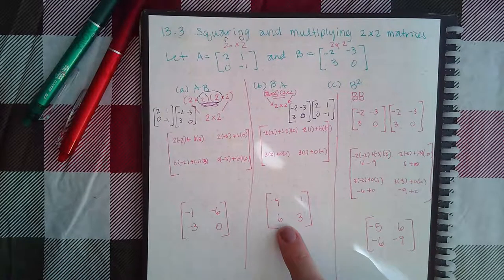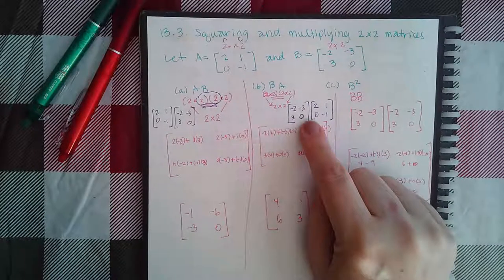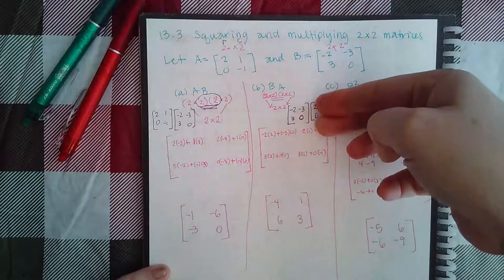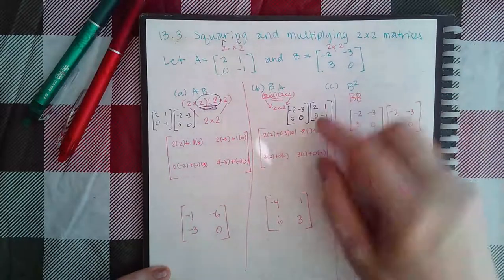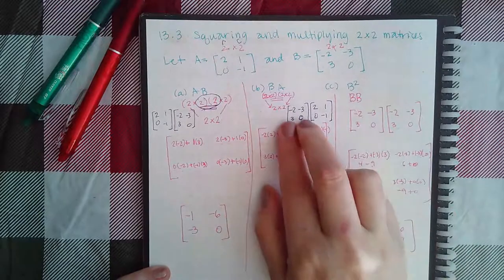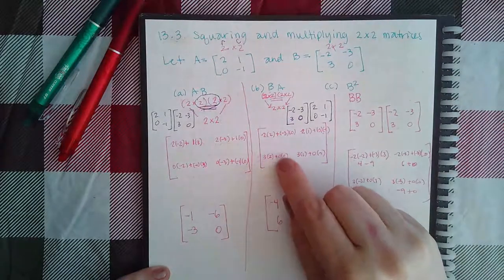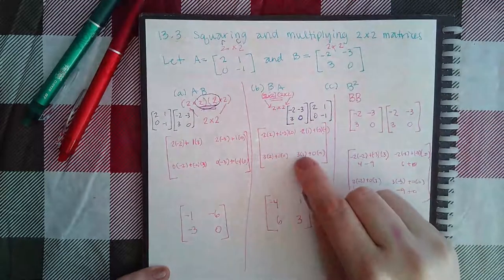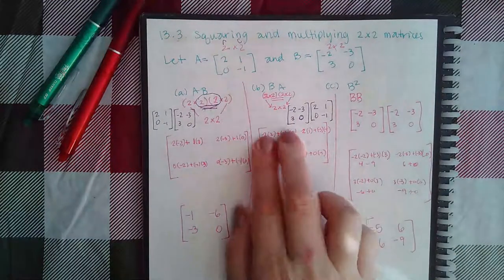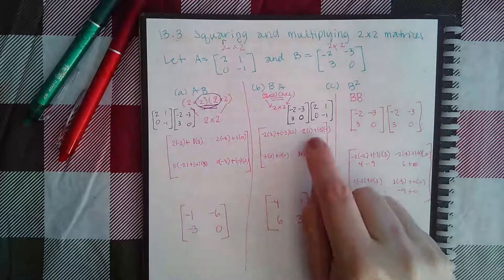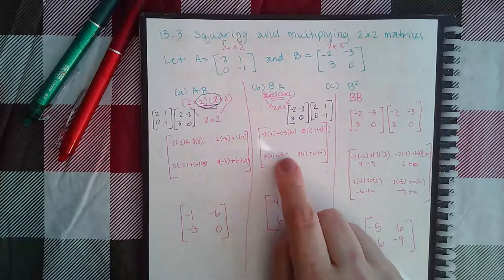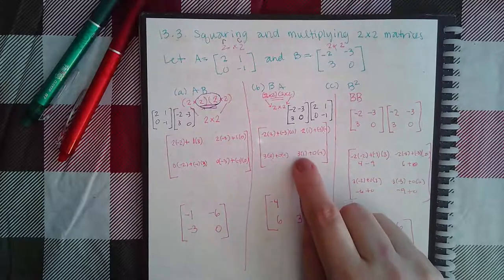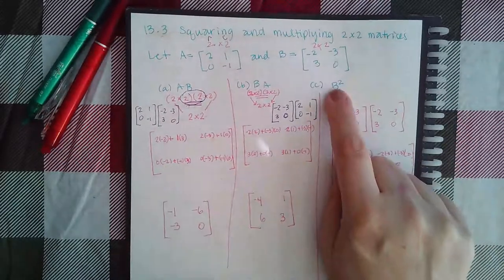Now let's multiply in the reversed order. First row times first column: negative two times two, negative three times zero. First row times second column: negative two times one, negative three times negative one. Second row times first column: three times two, zero times zero. Second row, second column: three times one, zero times negative one. Taking the sums: negative four, then negative two plus positive three equals one, six plus zero equals six, and three plus zero equals three.